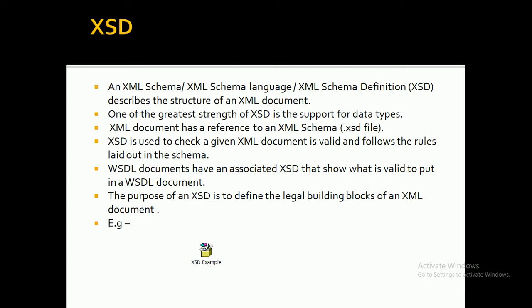As of now what we understood is XML is basically used to exchange data between two applications in web services. XML is completely a tag-based language. There is no scope to define any data types — in XML we cannot define the data type of a tag.